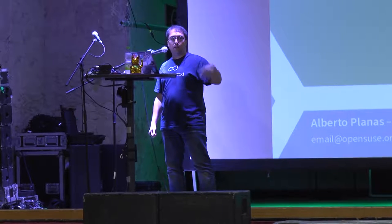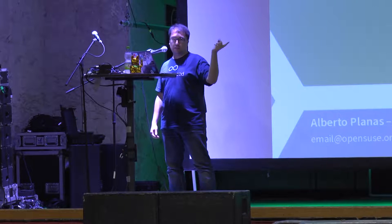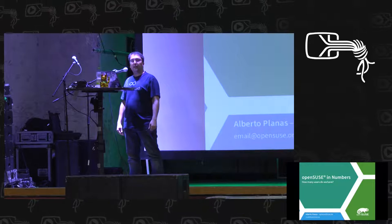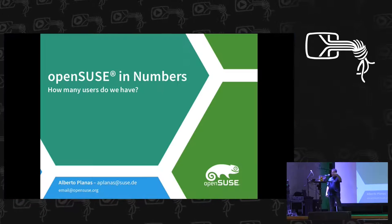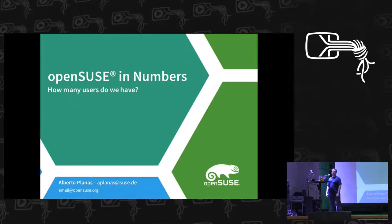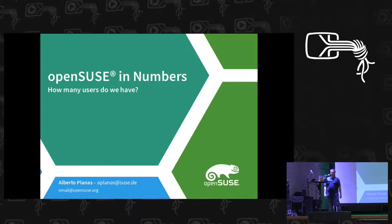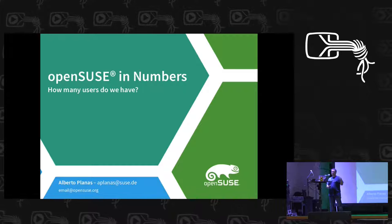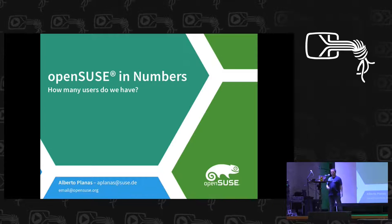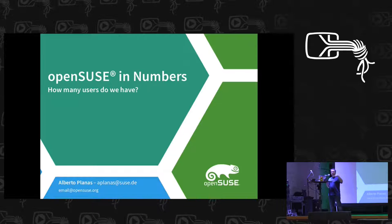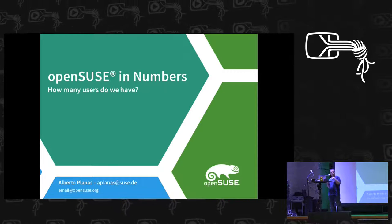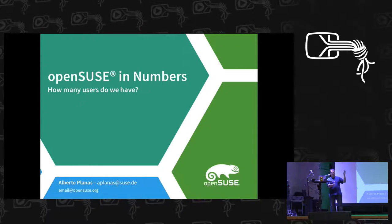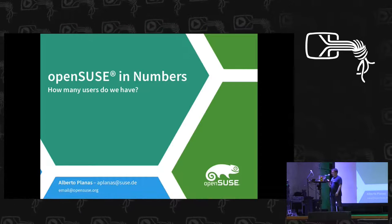I am Alberto Planas. I am part of the cloud team for SUSE these days, but I started in 2012 and joined the OpenSUSE team. We are going to talk about some numbers, some statistics that we did in OpenSUSE, and we are going to try to make a picture of how OpenSUSE is today. This is the second time we did this exercise. The first time was in 2013, so three years is a good interval to see how we've evolved.